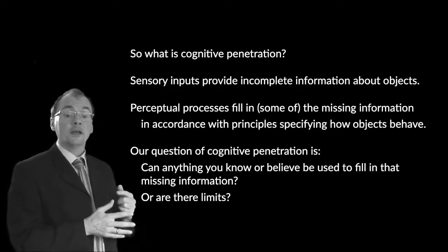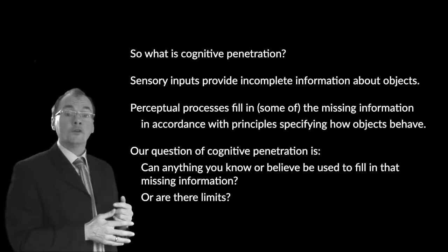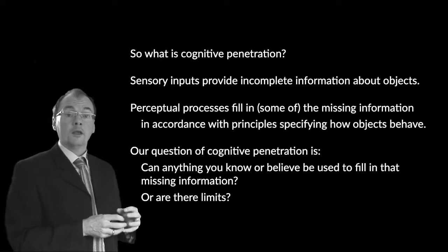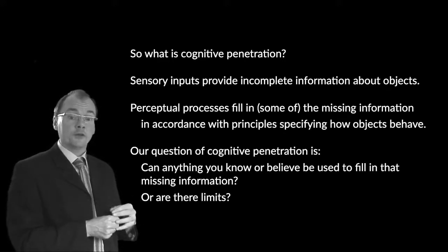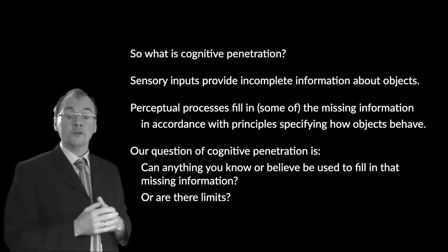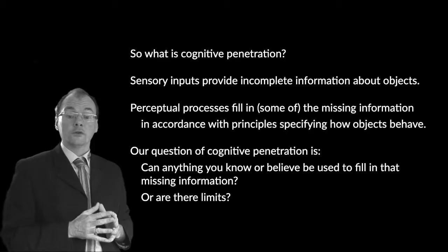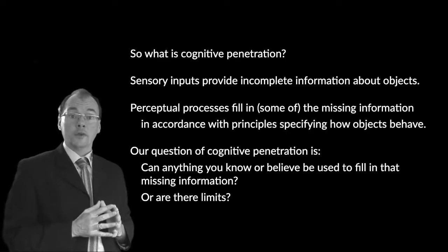Is there, if you like, some body of principles or theory which is proprietary to the perceptual systems so that information outside that proprietary body is not able to influence your object tracking? That, I suggest, is a good way for us to think about the question of cognitive penetration.